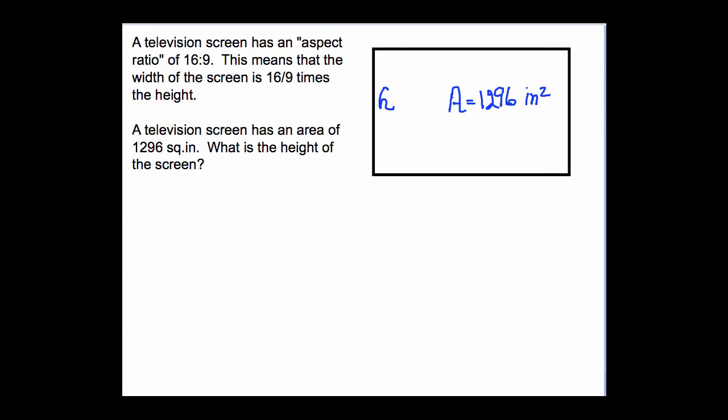A television screen has an aspect ratio of 16 to 9. That means that the width of the screen is 16 ninths times the height. A television screen has an area of 1,296 square inches. What is the height of the screen? Let's make some guesses, and we'll see what happens.